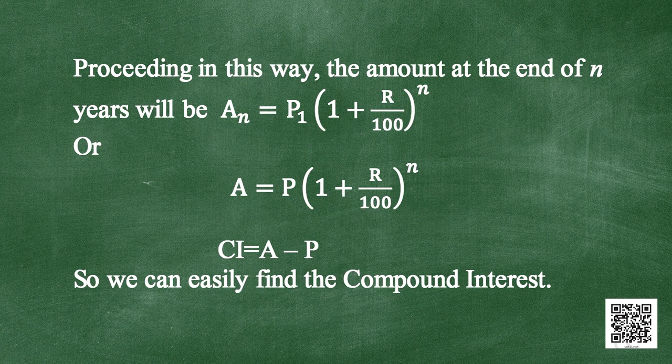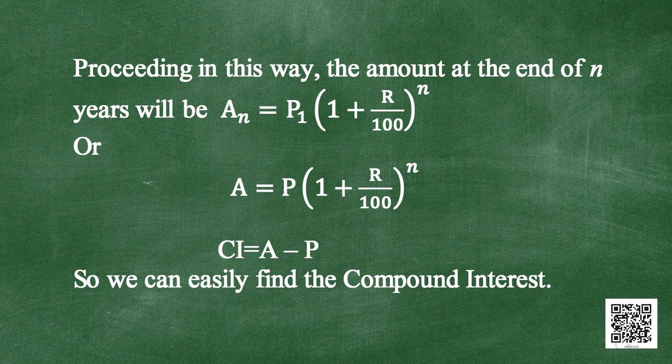Proceeding in this way, the amount at the end of the nth year is: A = P × (1 + R/100)^n. Thus the compound interest CI = A − P, where A is the final amount and P is the initial sum.